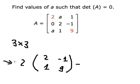Next minus, because this one is positive, then negative, then positive. So we have a here and we have the matrix. We hide this one. So we have 0, negative 1, a, and 9.